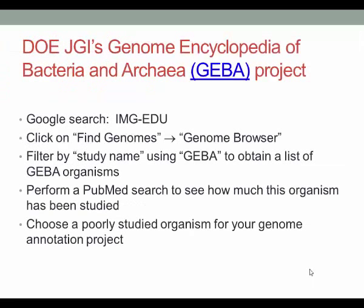You can identify a GEBA organism through the JGI's IMG-EDU database. Go to Google and search for IMG-EDU. There is a tab called Define Genomes, and from a drop-down menu, pull down Genome Browser or Genome Search. On the new page, you can filter by study organism by typing in GEBA, which will give you a list of GEBA organisms. Go down that list looking for interesting organisms, perform a PubMed search to see how much the organism has been studied, and choose a poorly studied organism for your genome annotation project.